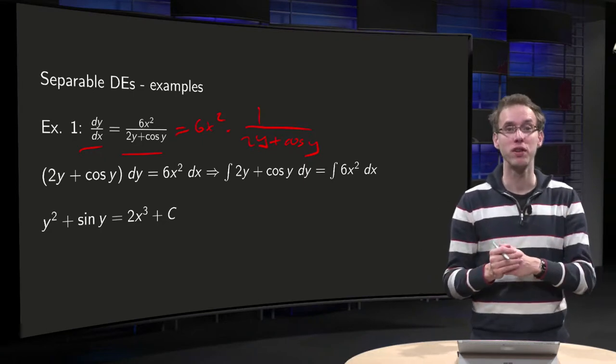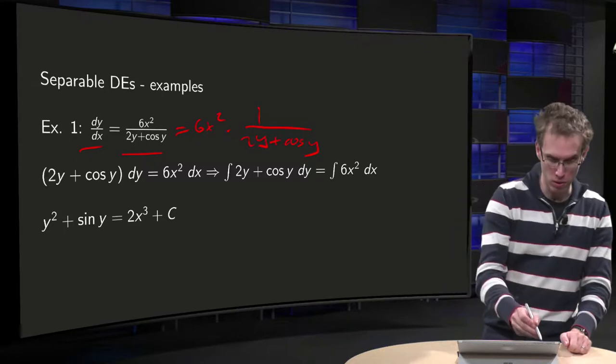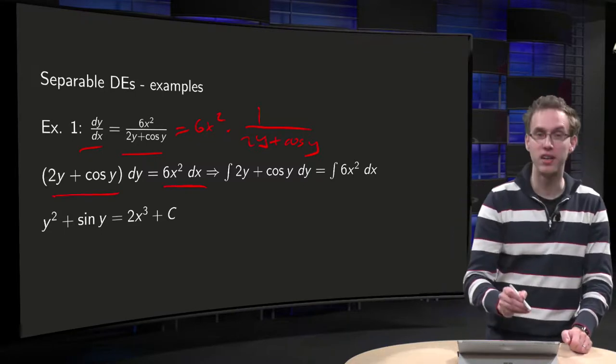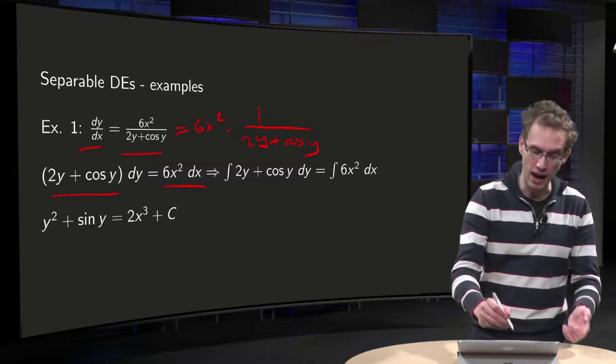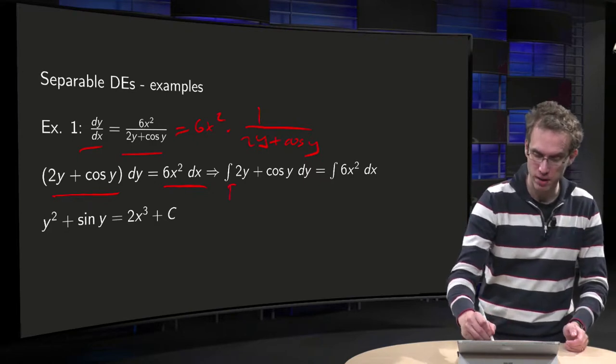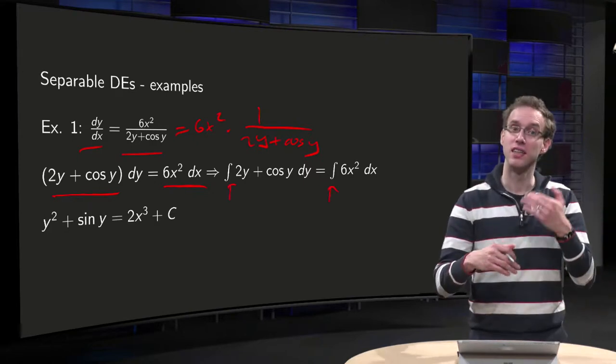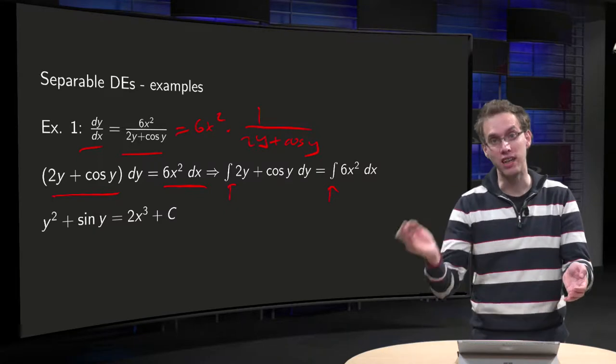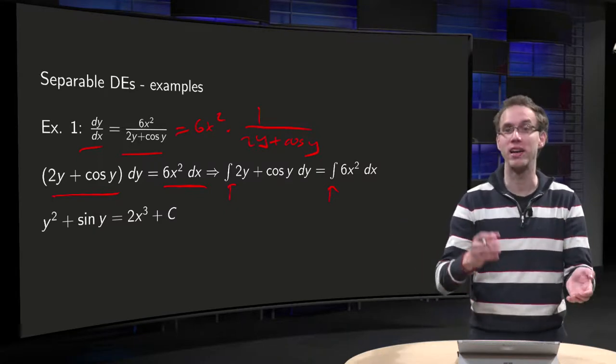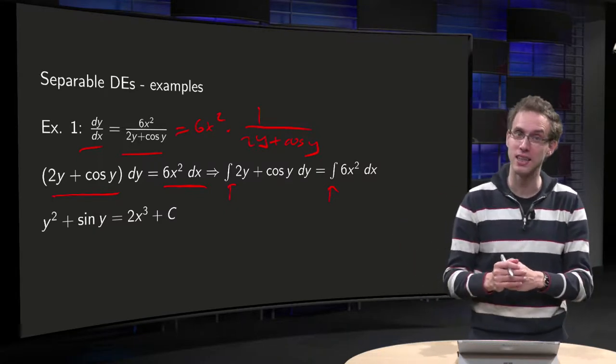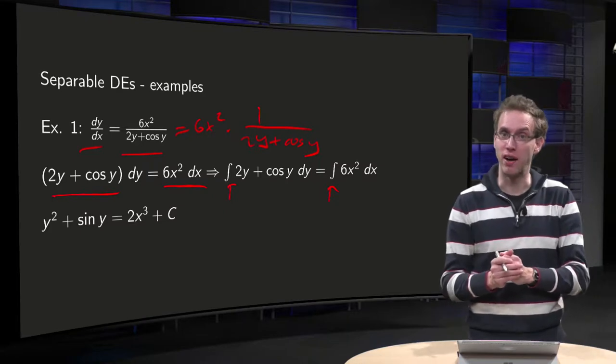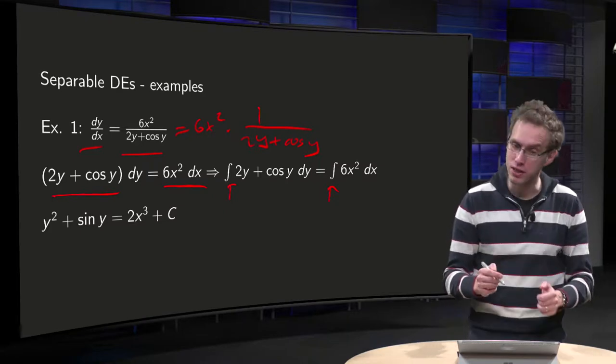How do we solve it? Well, we separate it. We put all y's on the left hand side, all x's on the right hand side. We add the integral sign, so we have to integrate the left hand side with respect to y and the right hand side with respect to x. And then we see, can we find the antiderivatives? Well, in this example we can.